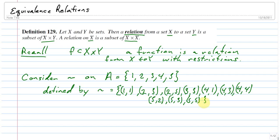So that's certainly a subset of A cross A. These are ordered pairs where the first element comes from A and the second element comes from A.